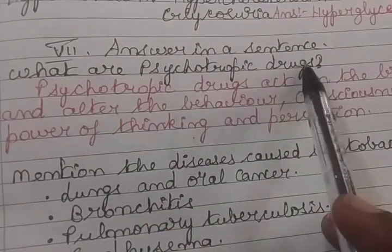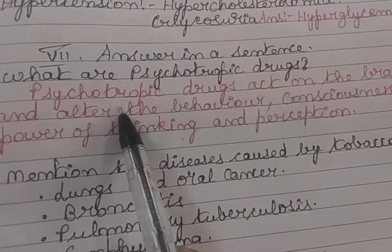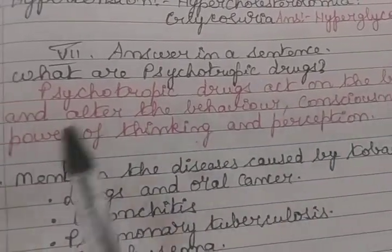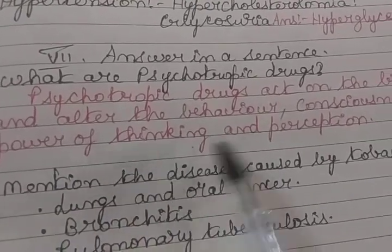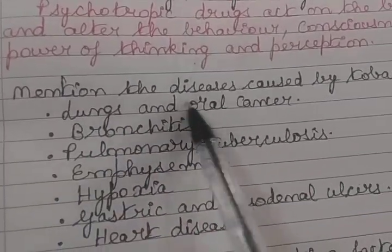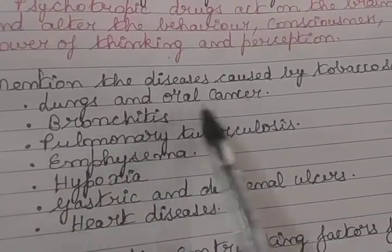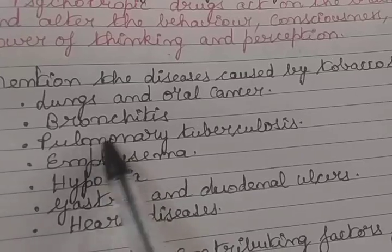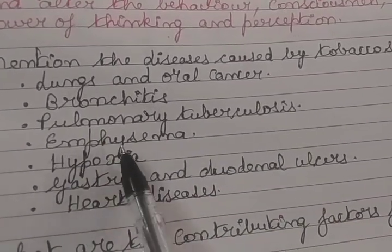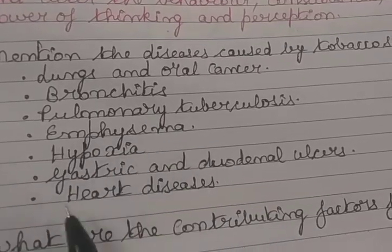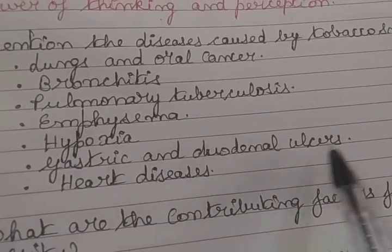Answer in a sentence. What are psychotropic drugs? Psychotropic drugs act on the brain and alter the behavior, consciousness, power of thinking and perception. Mention the diseases caused by tobacco smoke: lungs and oral cancer, bronchitis, pulmonary tuberculosis, emphysema, hypoxia, gastric and duodenal ulcers.